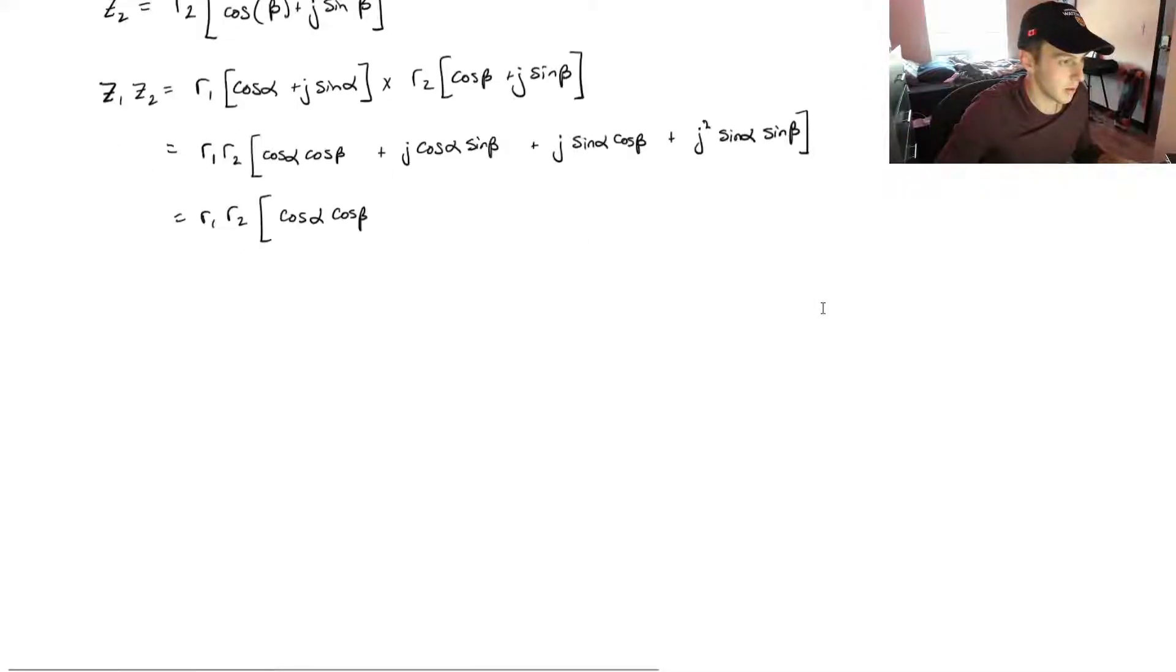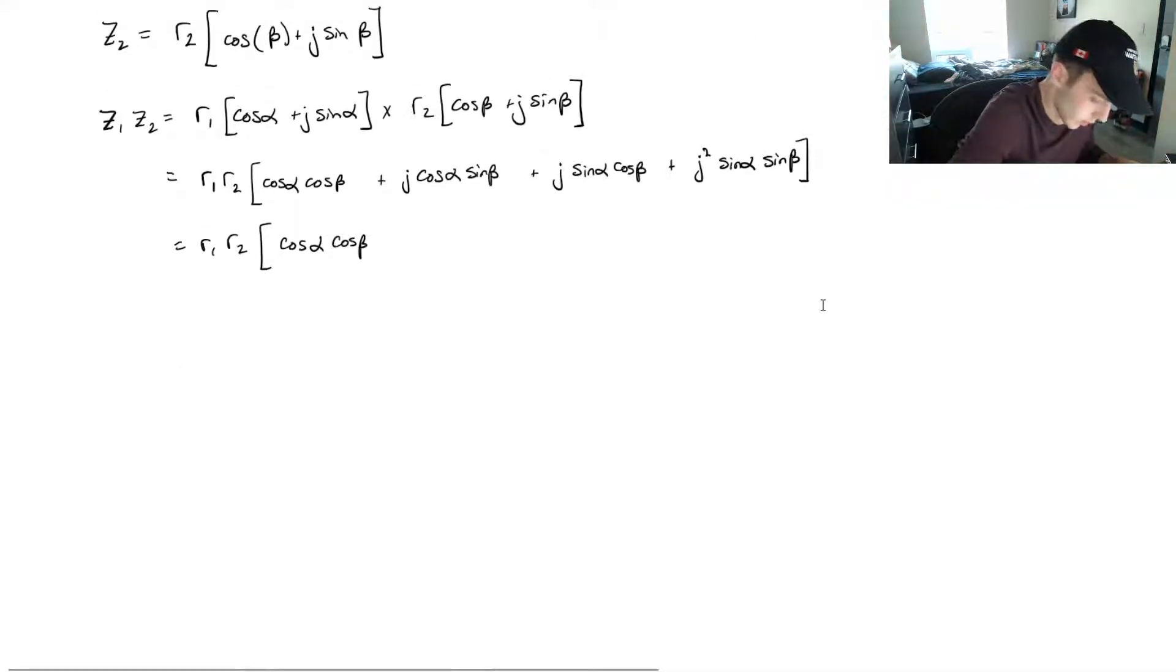We know that this j squared right here, that's going to be equal to negative 1. So, it's going to be minus sin of alpha sin of beta.